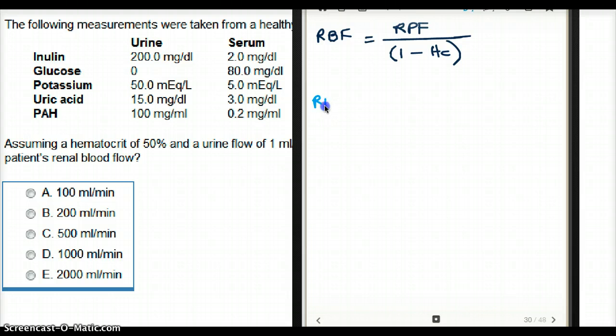So renal plasma flow is equal to urine concentration, and we measure plasma flow using PAH. So all these values are unnecessary. All we need is PAH. Urine PAH times urine flow divided by plasma PAH, which is equal to...